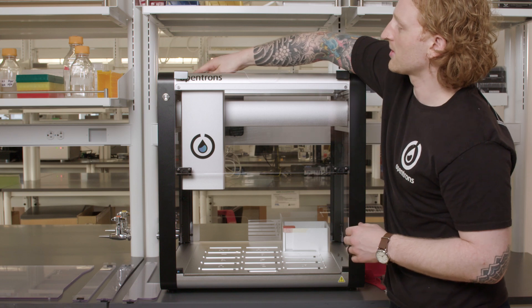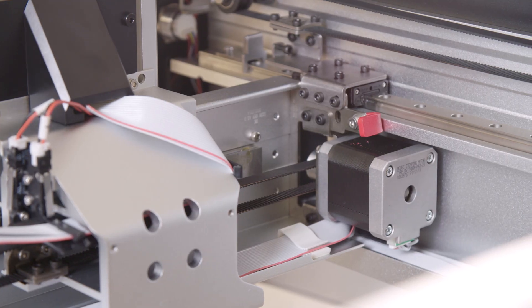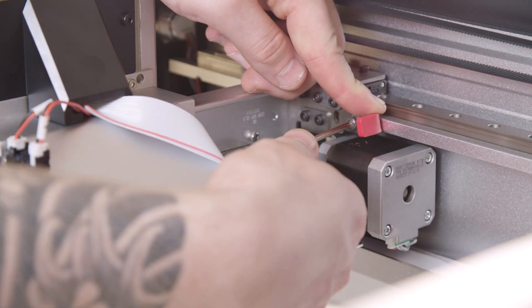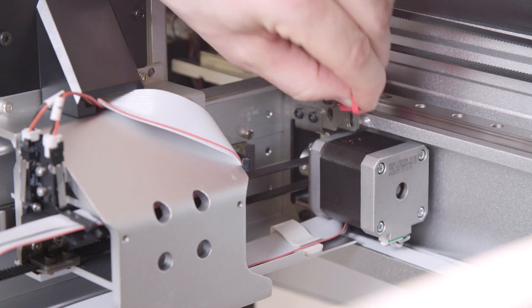The last locking bracket is the smallest. It is located on the left side of the robot opposite the trash at the intersection of the X and Y rails. Once this third and final bracket is removed, I will now install the top window and side panels on the OT2.